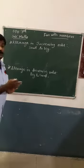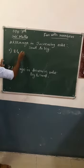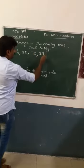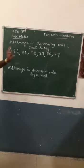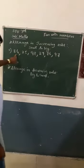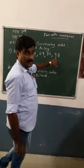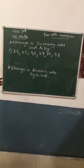Increasing order means small to big. Suppose for example, here are six numbers: 84, 25, 98, 29, 86 and 97. How do we write in increasing order?